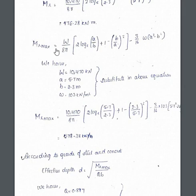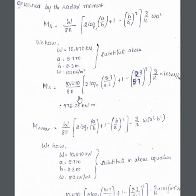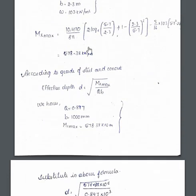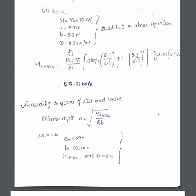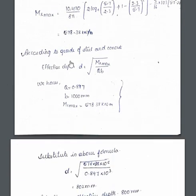The maximum moment at the joint of the chimney and slab is: Mr_max = (w/8π) × [2 log_e(a/b) + (1 − (b/a)²) × (3/16) × w × (a² − b²)]. Here, capital W is the total weight and small w is the load intensity of 103 kN/m². Substituting all values gives Mr_max = 578.38 kN·m.